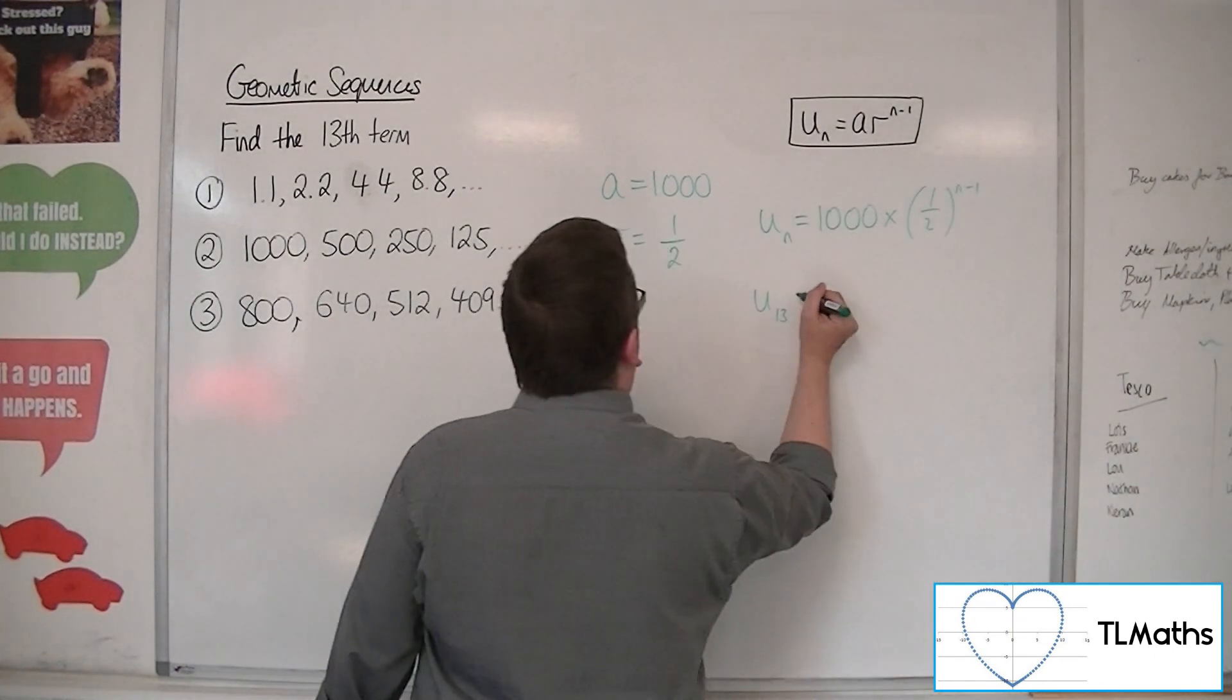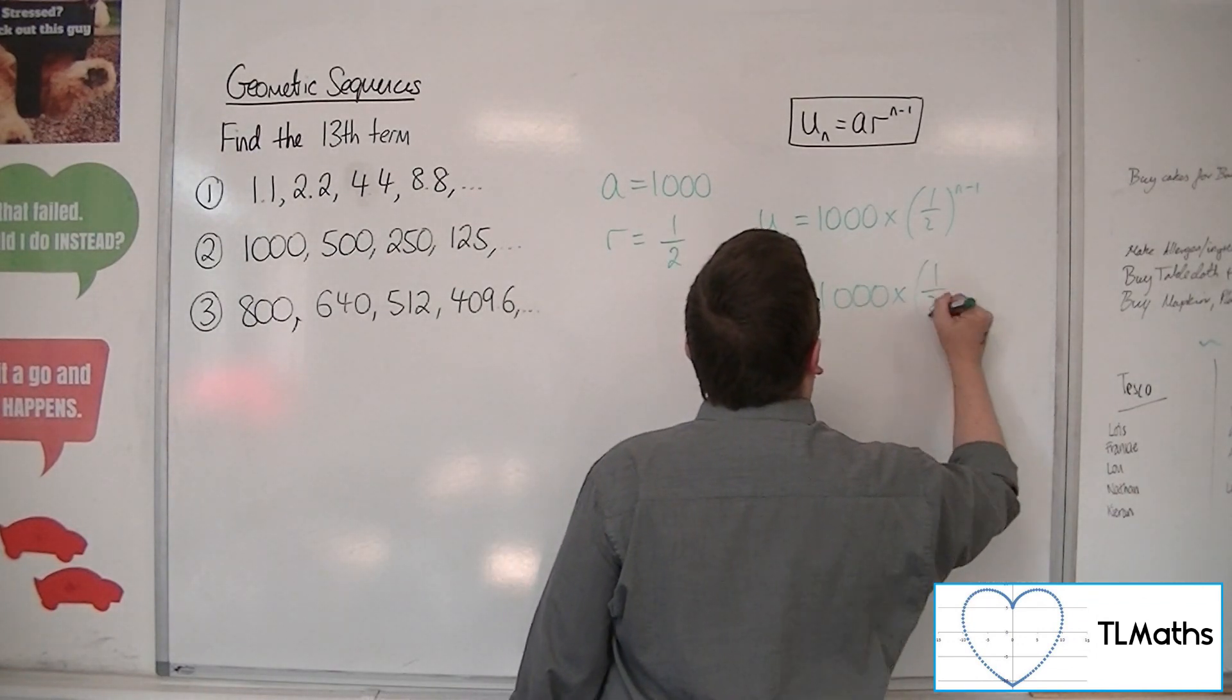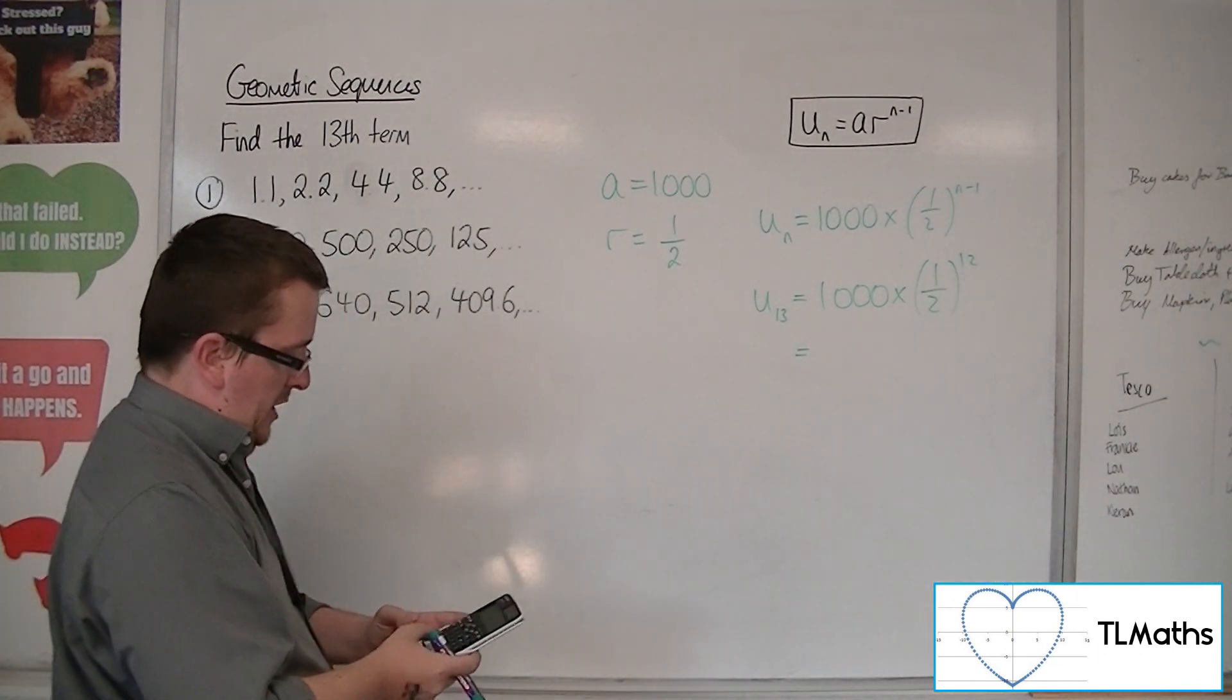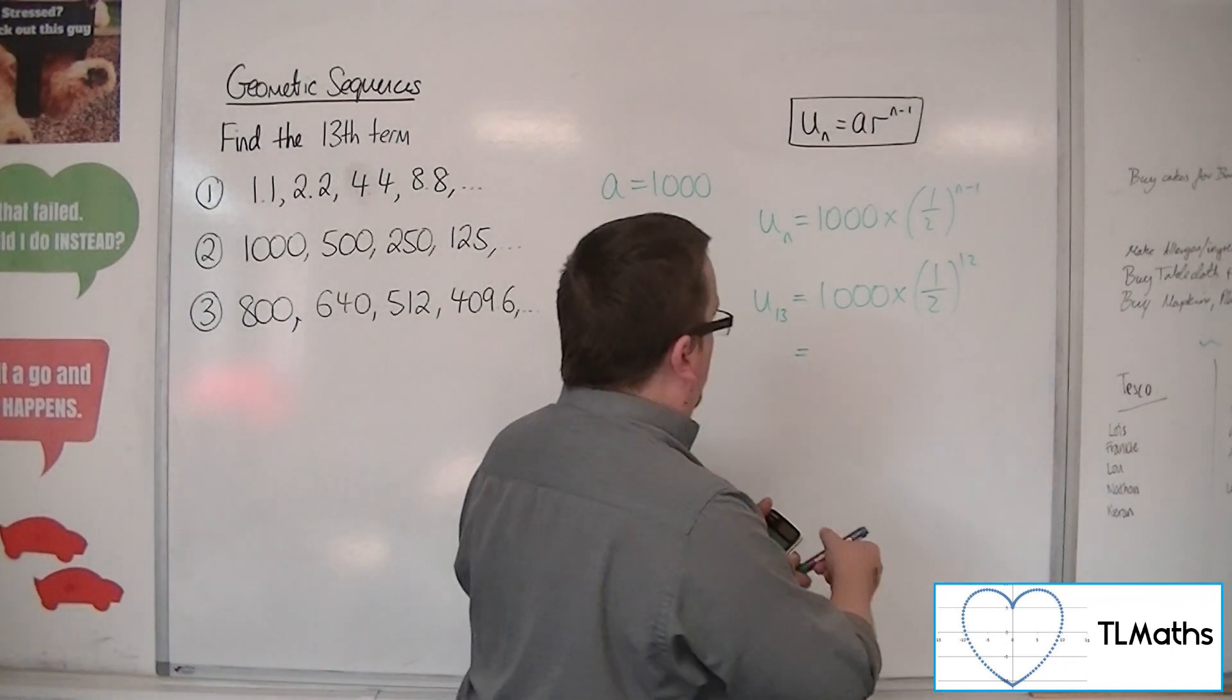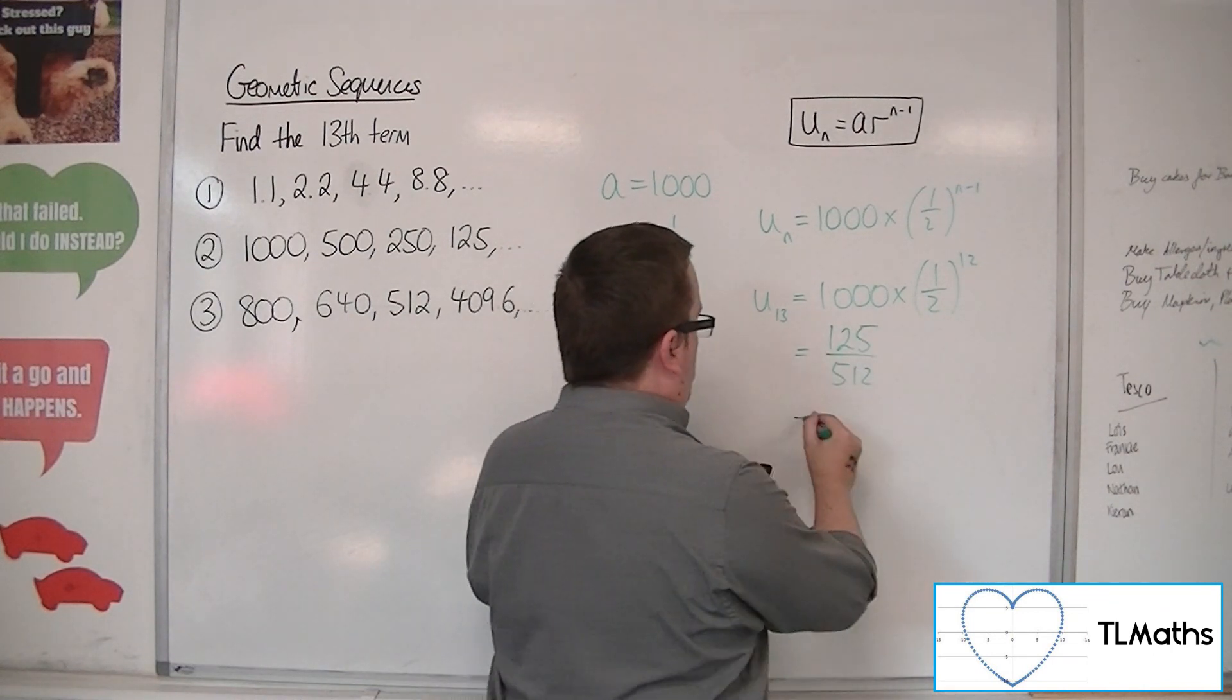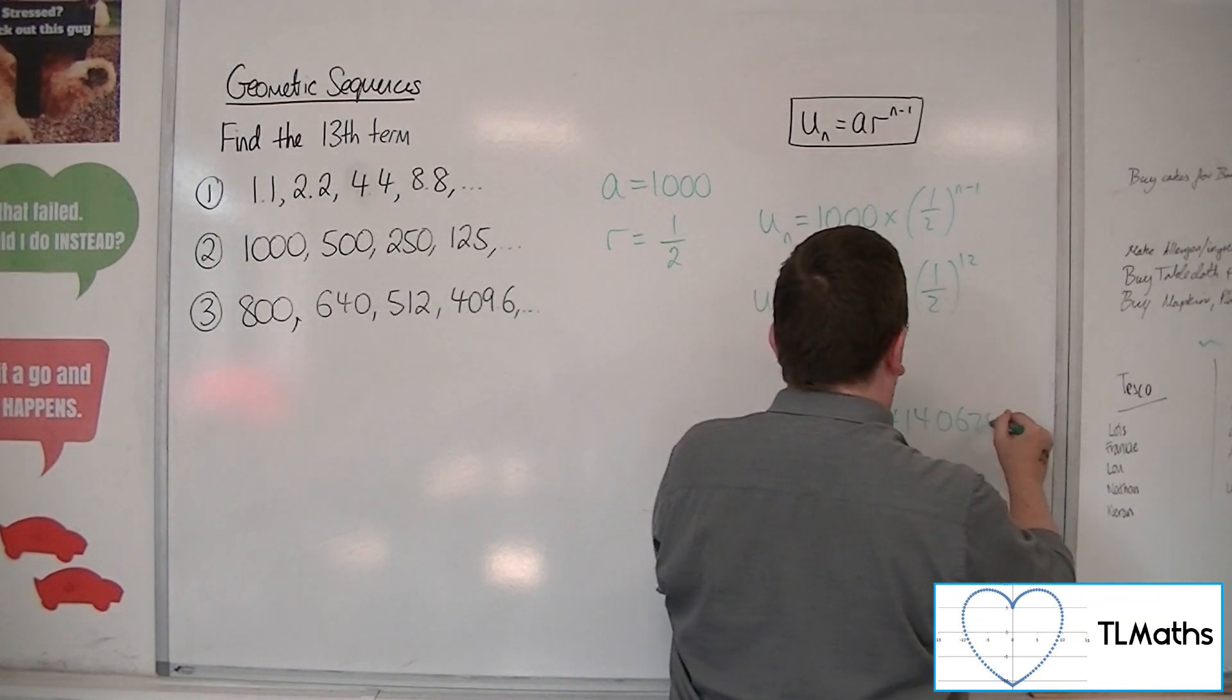So the 13th term is 1,000 times by 1 half to the power of 12. So 1,000 times by 1 half to the power of 12 is 125 over 512.